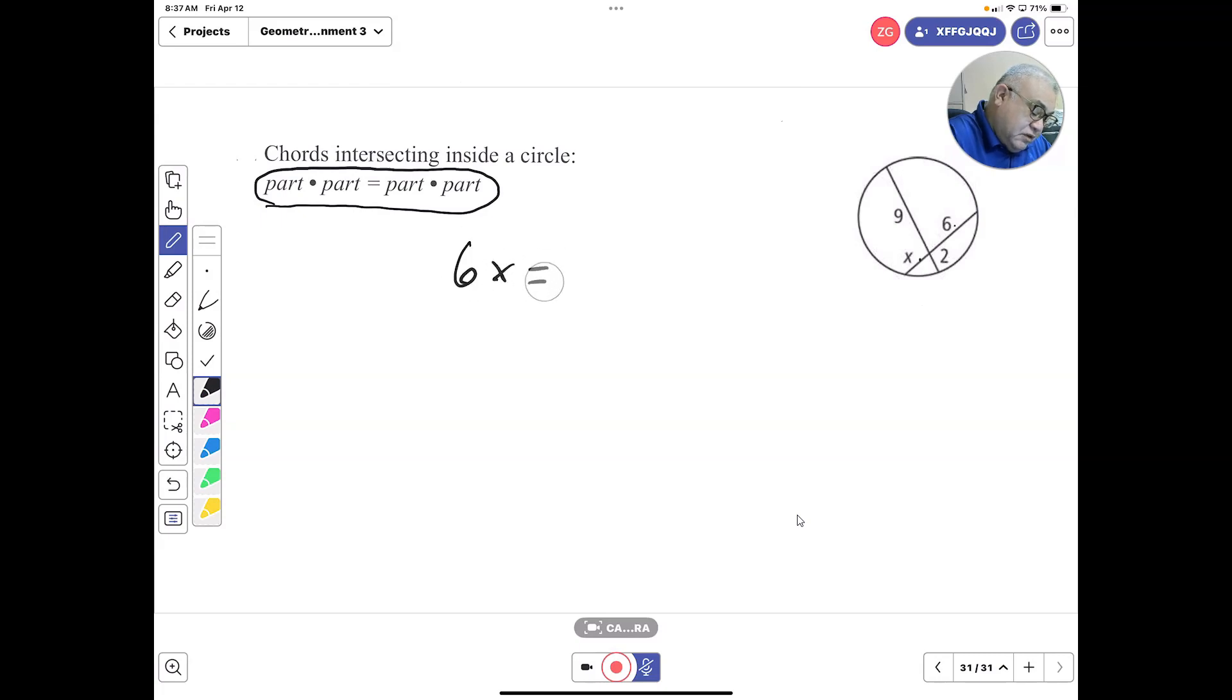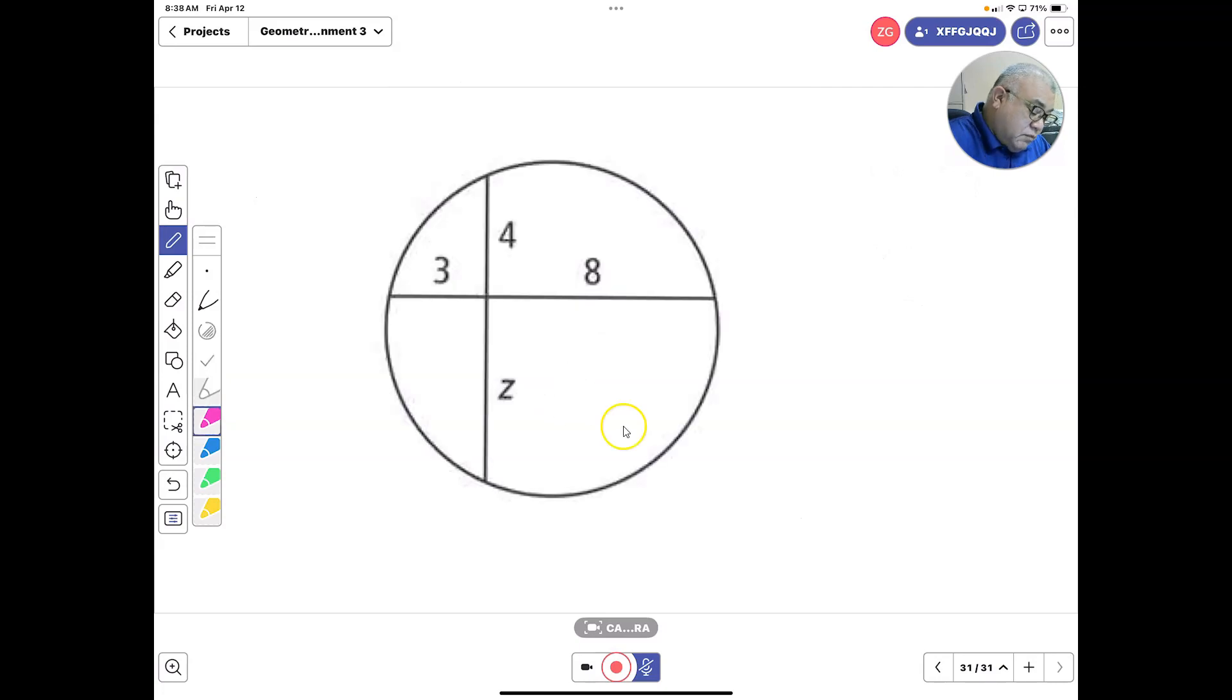So it's 6x equals 9 times 2. 9 times 2 is 18. We divide by 6, so the value of x or the length of this segment will be equal to 3. Remember we have two chords that are intersecting.